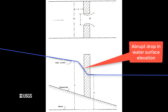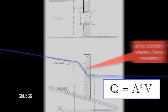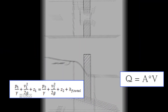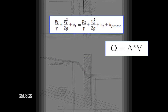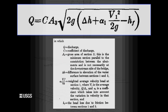That drop in water surface can then be related to the corresponding change in velocity. By making some substitutions with the continuity equation into the energy equation, and then by doing a little bit of simplifying and rearranging, we can arrive at a discharge equation between the two sections.